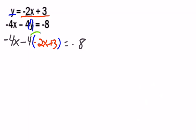So our first step is going to be distributing that negative 4. So I'm going to come down here. Negative 4x. Negative 4 times negative 2x, you want to make sure you're watching signs, is positive 8x.